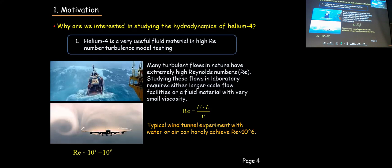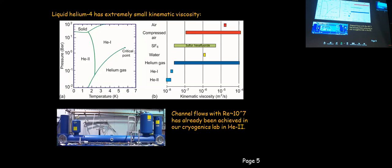Why are we interested in studying hydrodynamics in cryogenic helium? Cryogenic helium is a very useful fluid material in turbulence research, especially in high Reynolds number turbulence research. Turbulence in nature — such as air around flying airplanes or turbulent flows generated by large ships in the ocean — can have extremely high Reynolds numbers, like 10^8 to 10^9. It's extremely difficult to generate those highly turbulent flows in laboratory settings. With typical wind tunnels, one can hardly get up to 10^6.